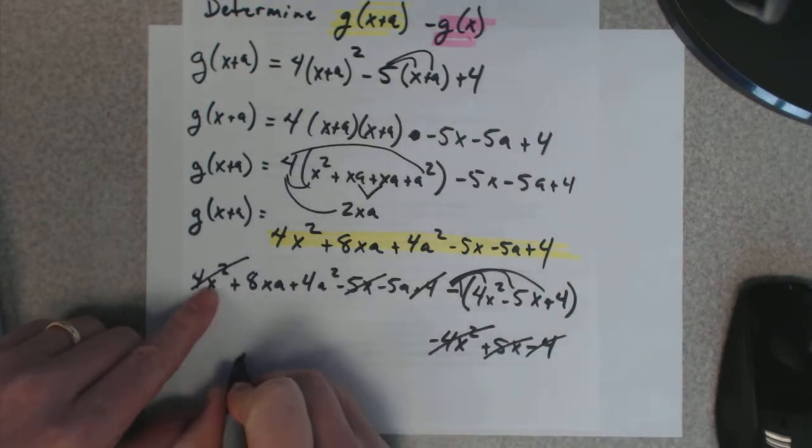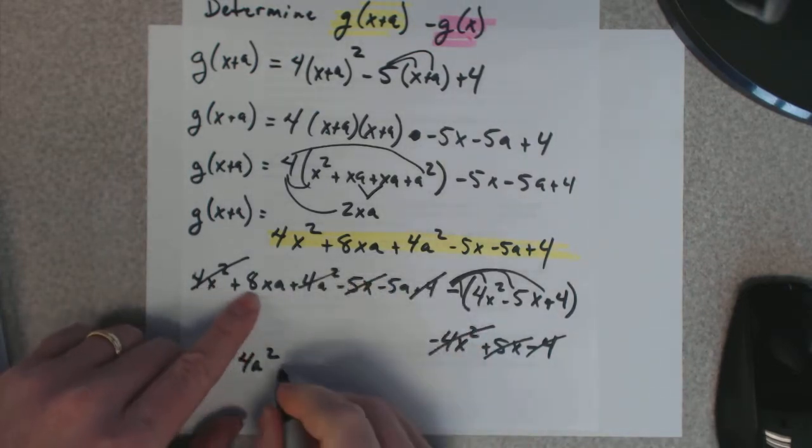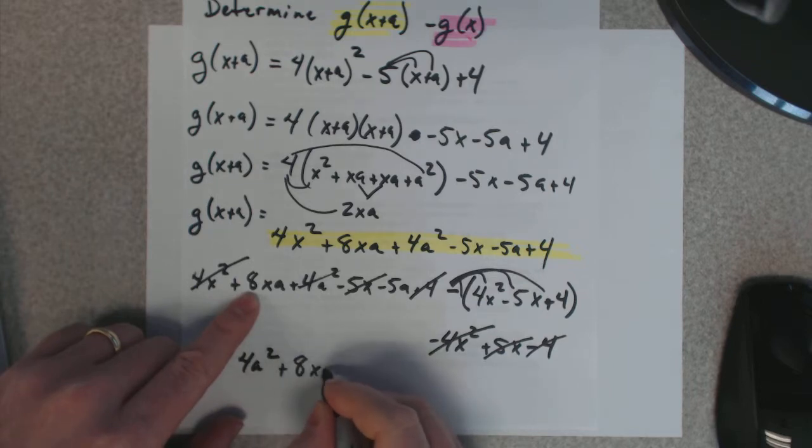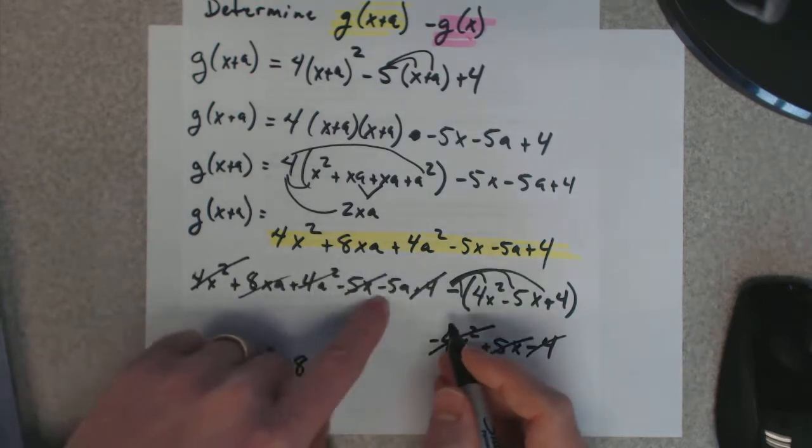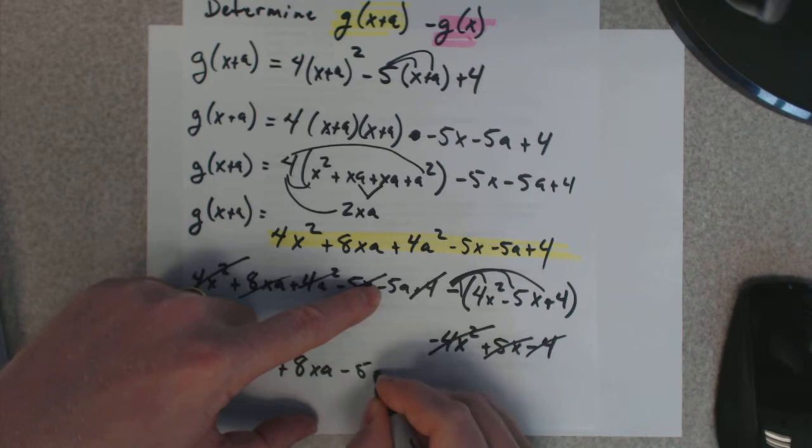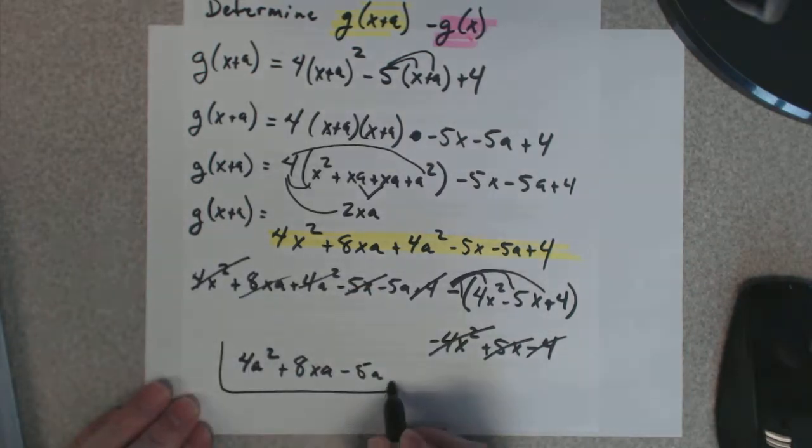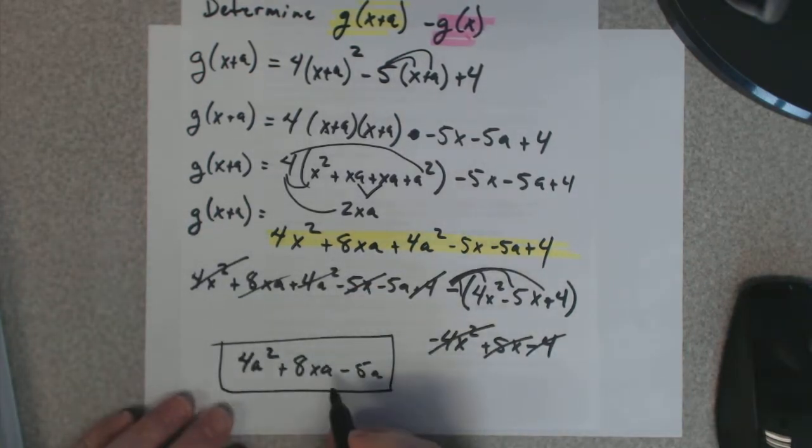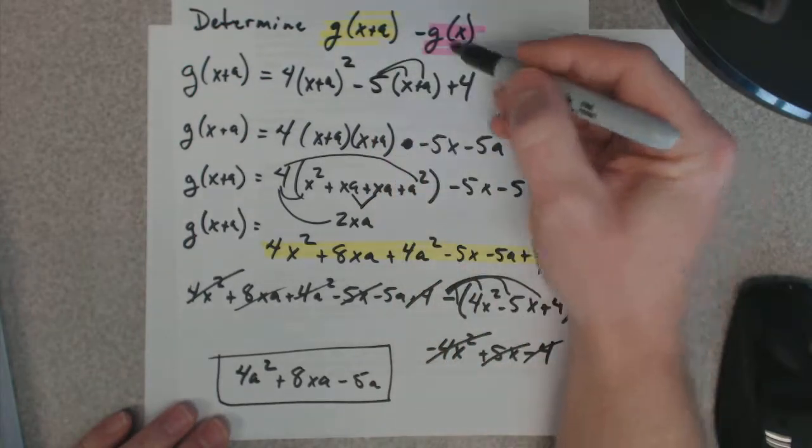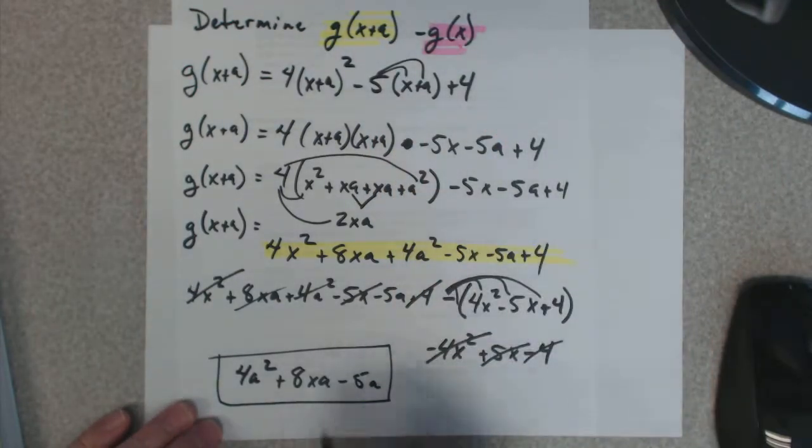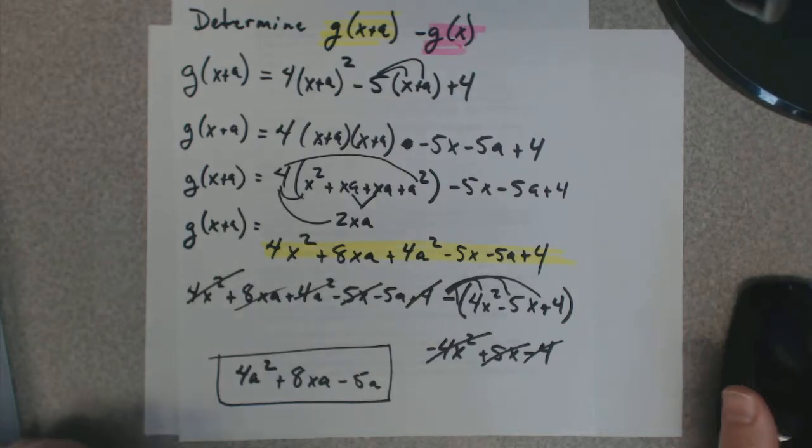We're left with 4a squared. We're left with a positive 8xa. And we're left with a negative 5a. And that's our answer. That is g of x plus a minus g of x.